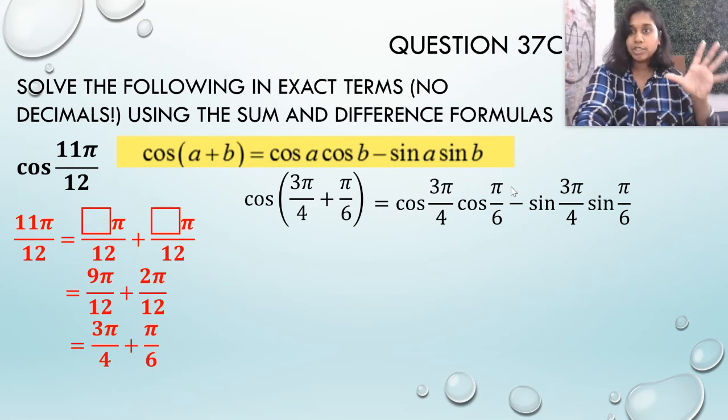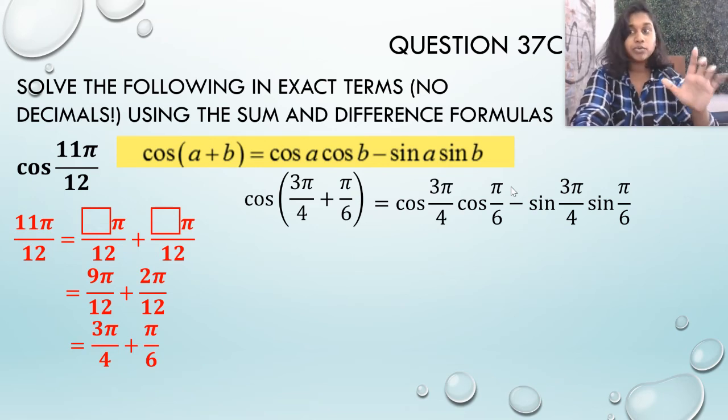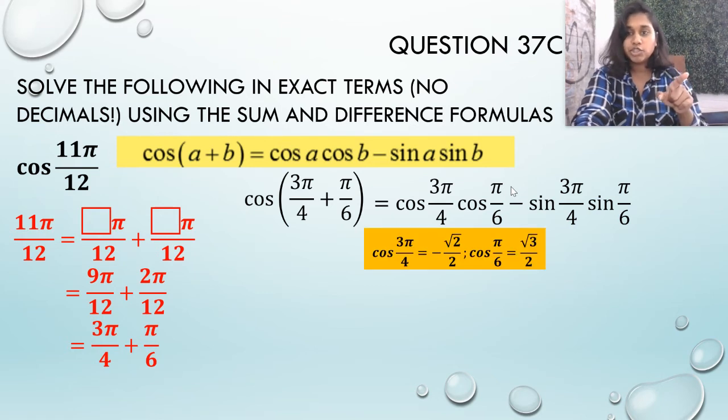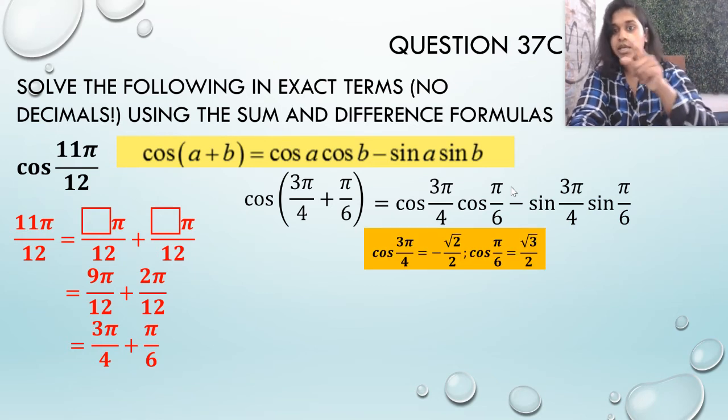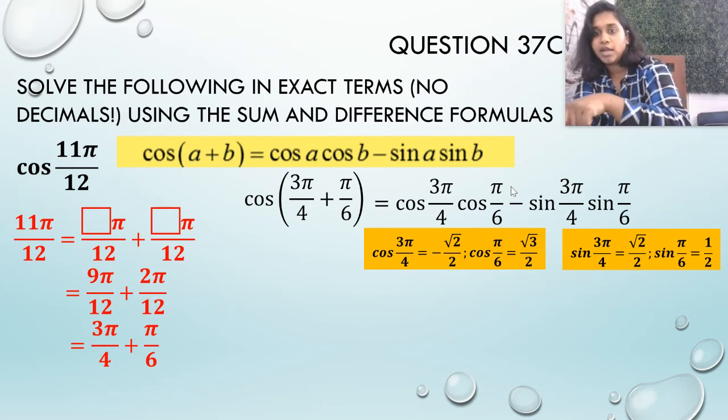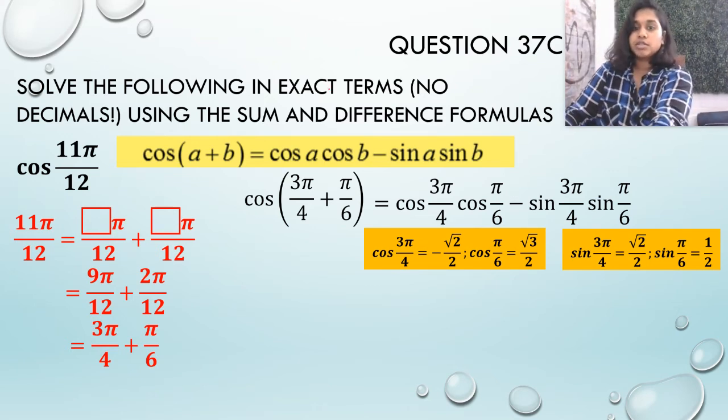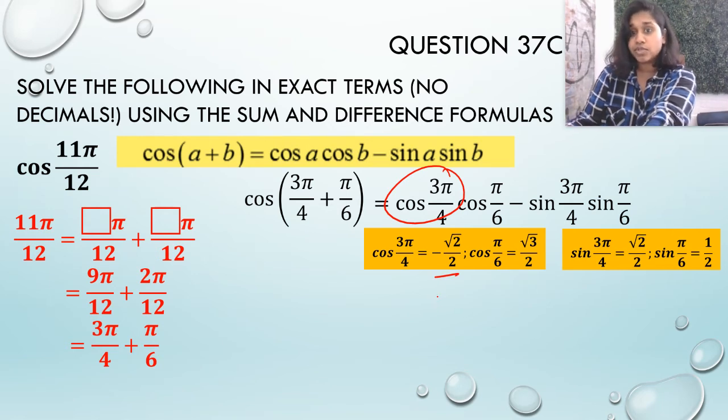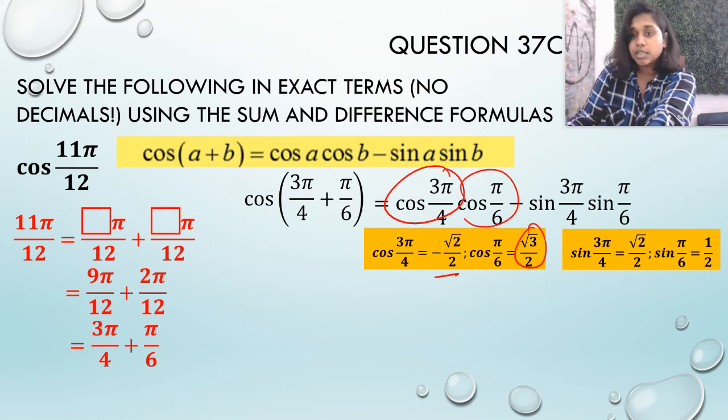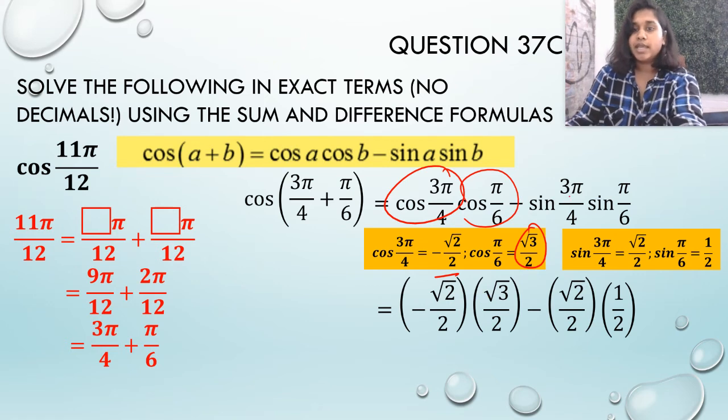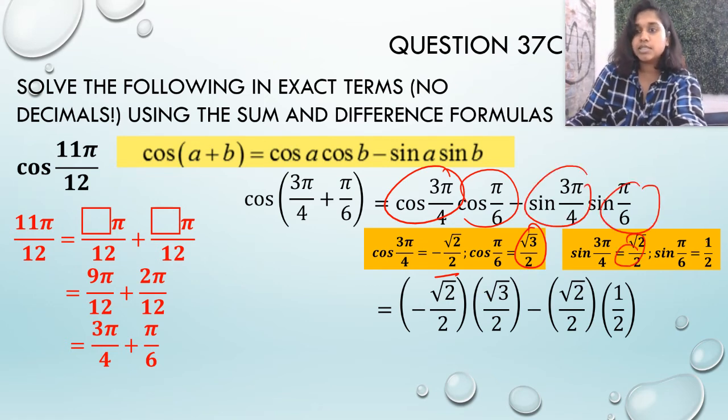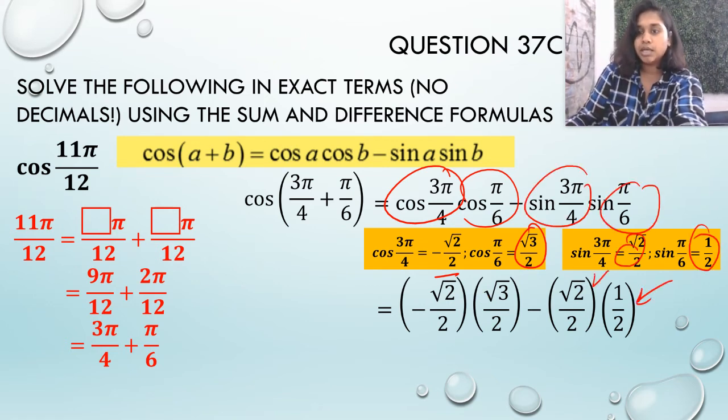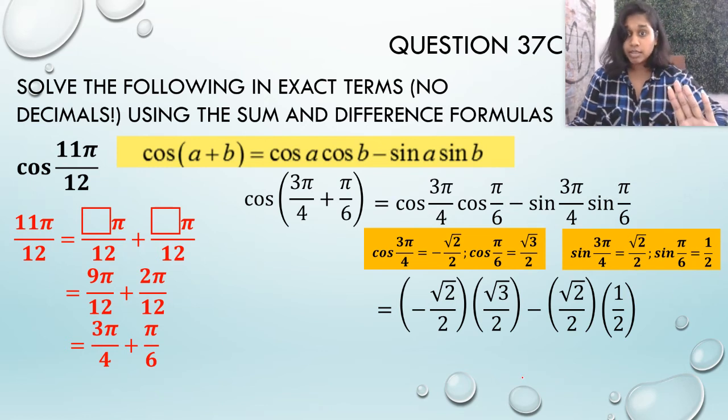I'm going to go ahead and plug in all that information. Using my hand trick, my chart trick, my unit circle, my first quadrant, whatever, I'm going to solve each of those parts. Cosine of 3 pi over 4, cosine of pi over 6, sine of 3 pi over 4, and sine of pi over 6. Now, I know those. If cosine of 3 pi over 4 is equal to negative square root of 2 over 2, and this is equal to this, then I'm just going to plug those in. And if this is equal to this, and this is equal to this, then I'm going to plug those in. That's all I did, is replaced.